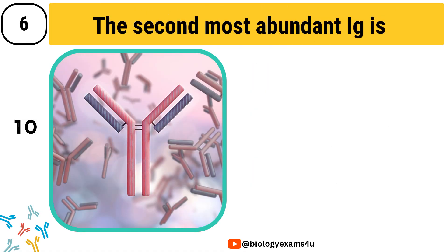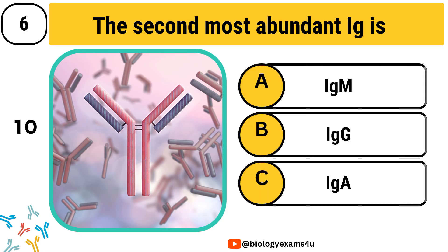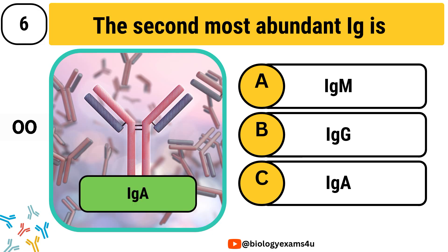Question number 6. The second most abundant immunoglobulin is: Option A, IgM. Option B, IgG. Option C, IgA. The correct answer is IgA.